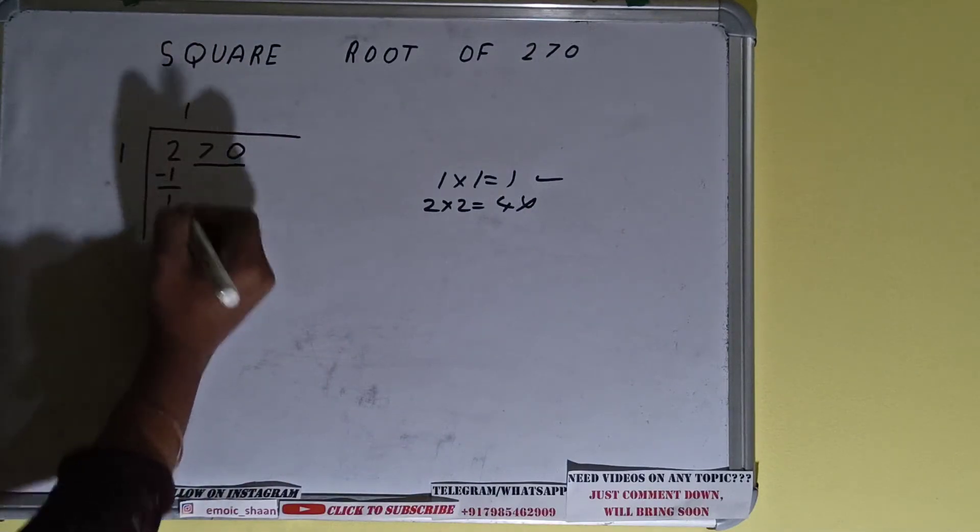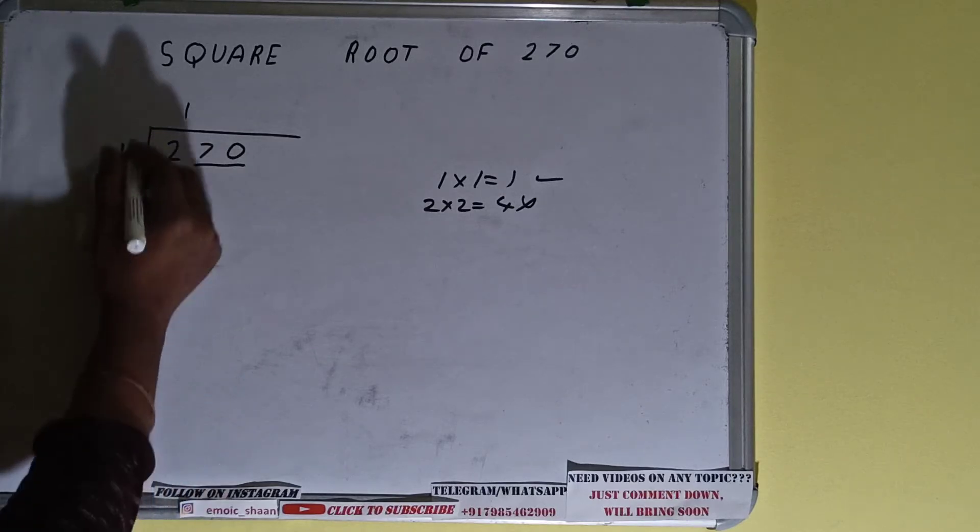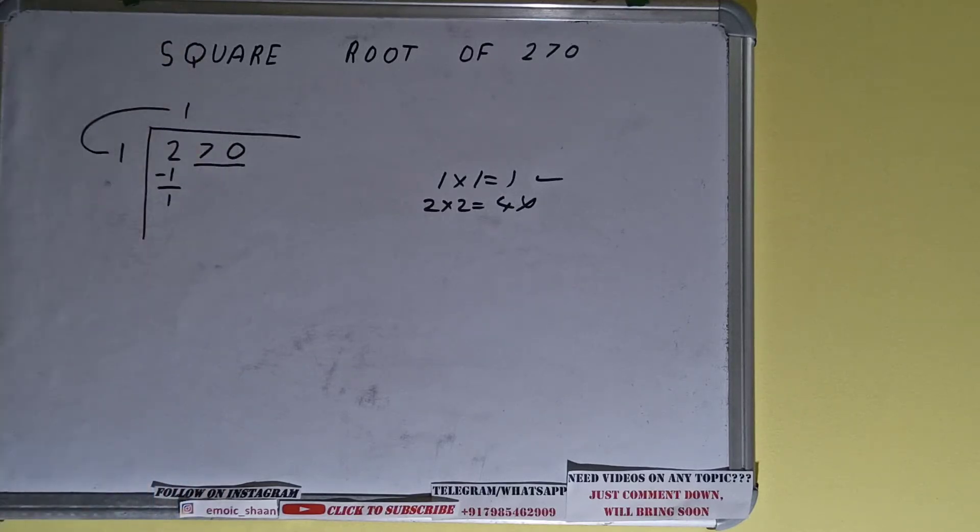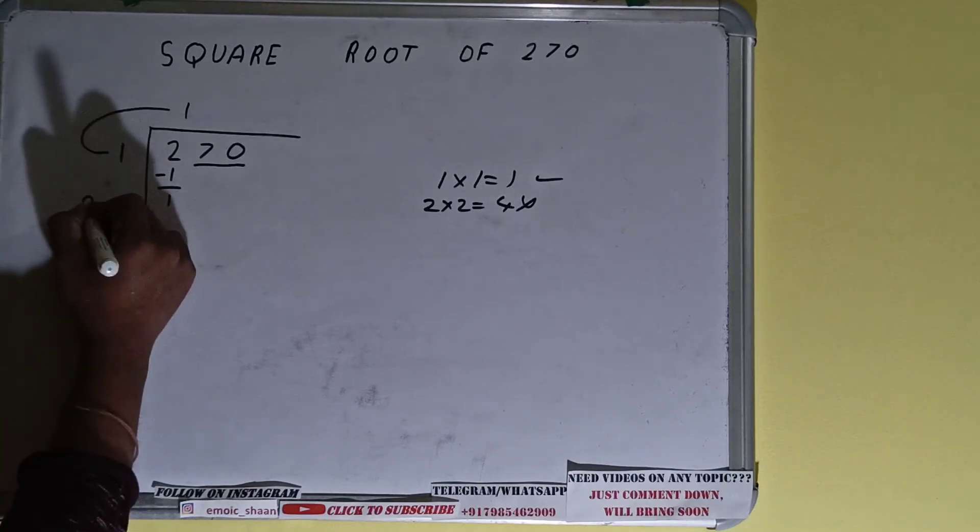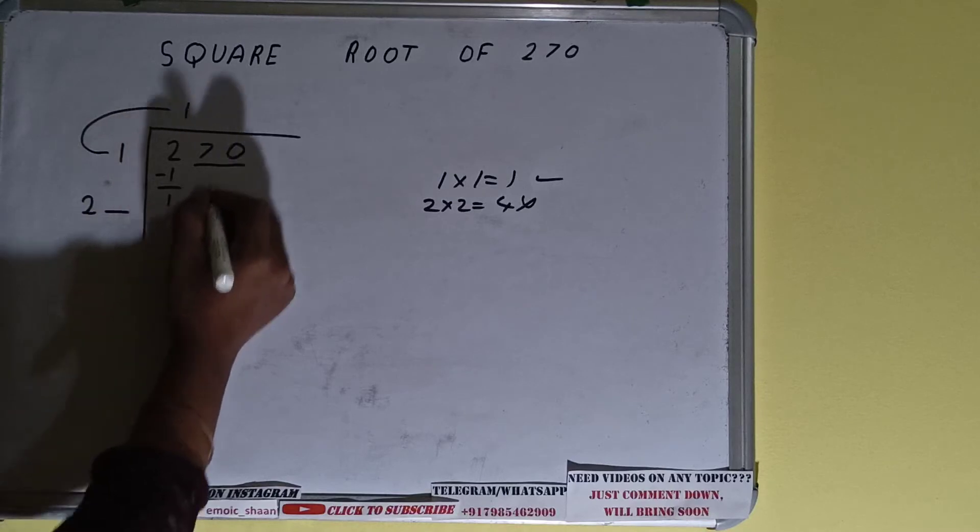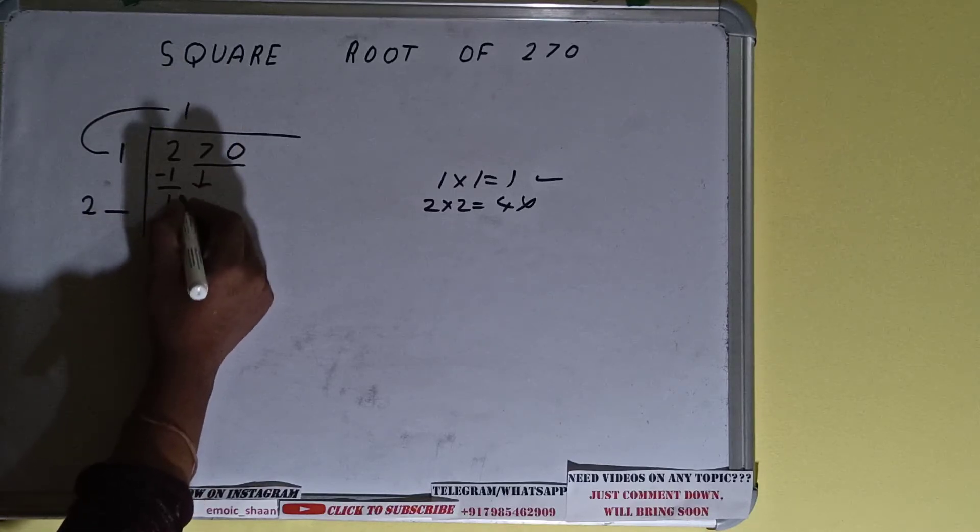Subtract it and we'll be having one. Now whatever is the divisor, that is one, added with what you multiplied with, that is also one. You did one into one, right? So do one plus one, it will be two. Keep one digit extra or bring the next pair down so that we can make the number big to divide, and it will become as 170.